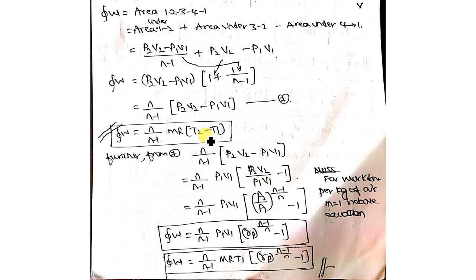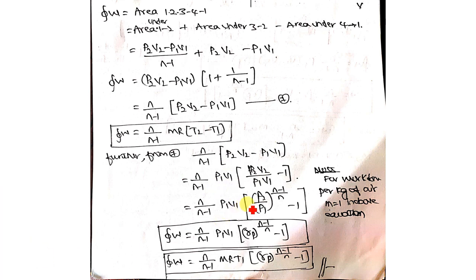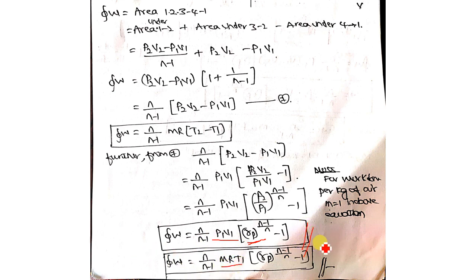Further, taking P1V1 as common, the ratio P2V2 / P1V1 is simplified. Applying the polytropic process relation, V2/V1 can be replaced to give the exponent (n-1)/n. Then P2/P1 is nothing but the pressure ratio Rp. Substituting, you get the expression in terms of P1V1 and Rp. P1V1 can also be written as mRT1, giving three equivalent forms of the work done expression.